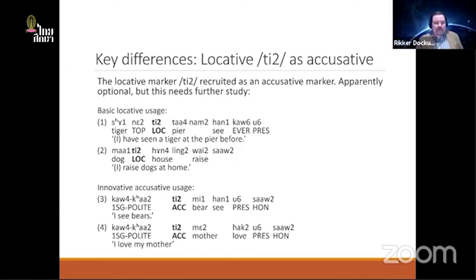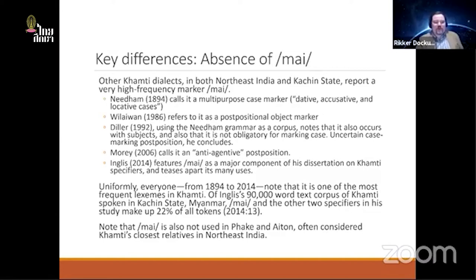One difference is that in the Chindwin River Valley, a locative marker is also used innovatively as an accusative — this is not obligatory but appears to be a novel usage not found in Ingles's data. Familiar usages would be locative 'at the pier' or 'at home', but the innovative usage marks the direct object — for example, 'I love my mother', where the mother is the direct object of the verb.